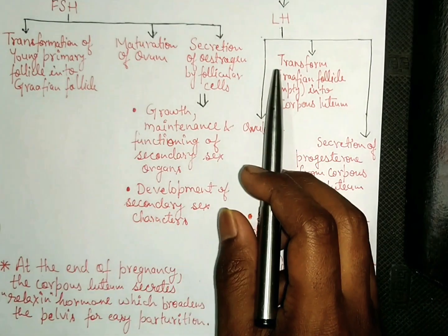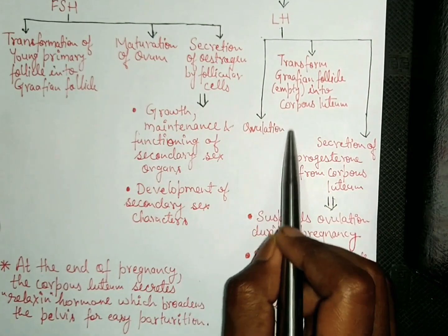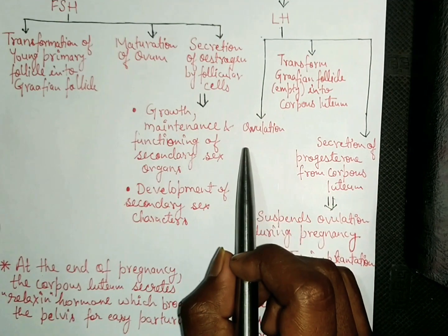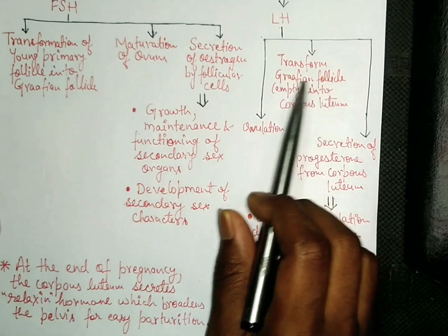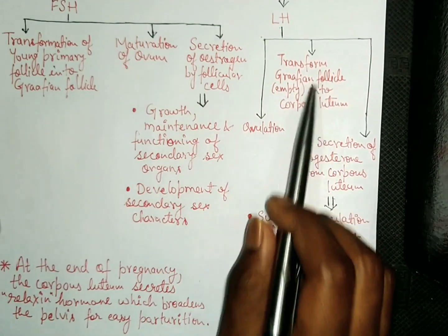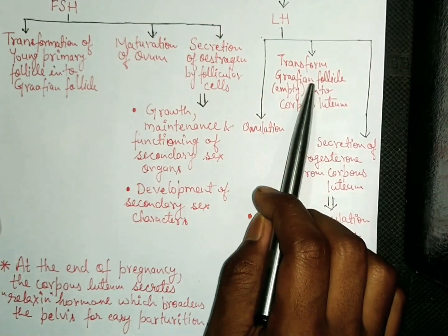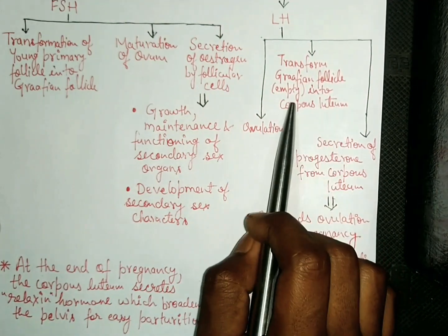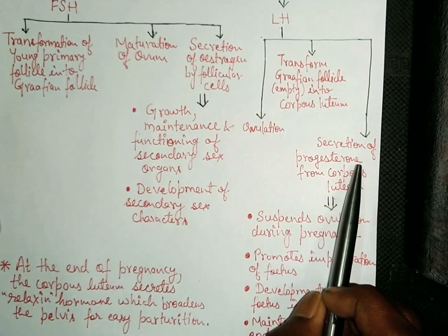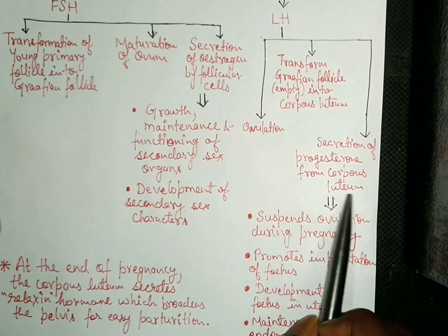Now let's see the role of LH, that is luteinizing hormone. LH is responsible for ovulation — the release of a secondary oocyte from the Graafian follicle. It also converts the empty Graafian follicle into the corpus luteum, and is responsible for the secretion of progesterone from the corpus luteum.